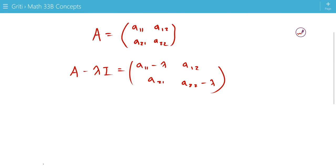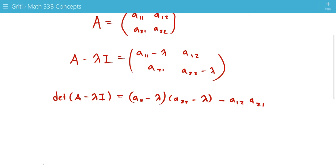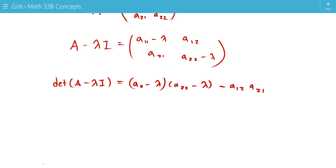If we take the determinant of this, it's going to equal (A11 - λ)(A22 - λ) - A12·A21. And if you multiply all that out, you should get λ² - (A11 + A22)λ + A11·A22 - A12·A21.